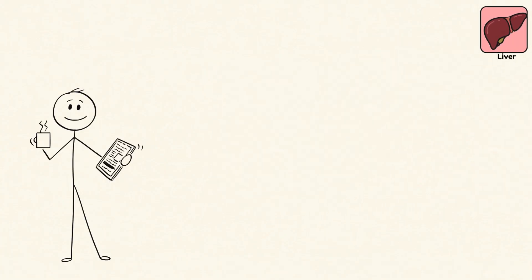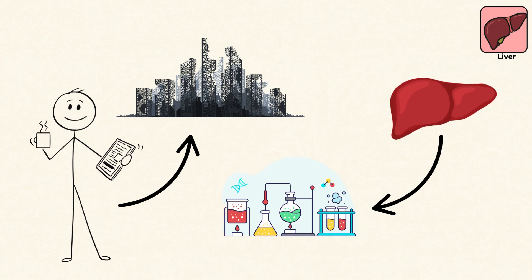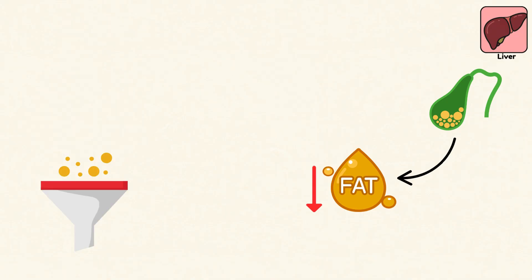Liver. If your body were a city, the liver would be the recycling plant, the chemical lab, and the water treatment center all at once. It turns nutrients from food into usable fuel, produces bile to break down fats, and filters out toxins, alcohol, and drugs from the blood.